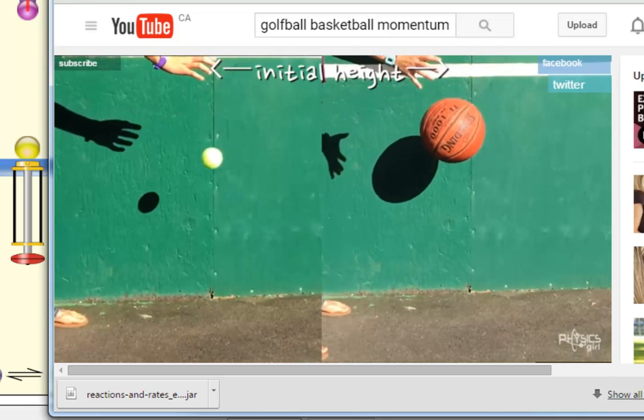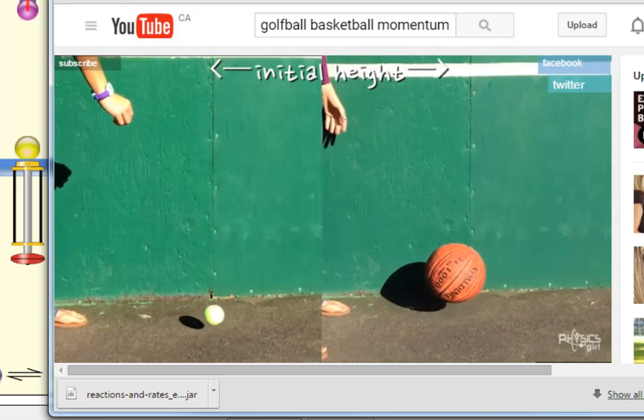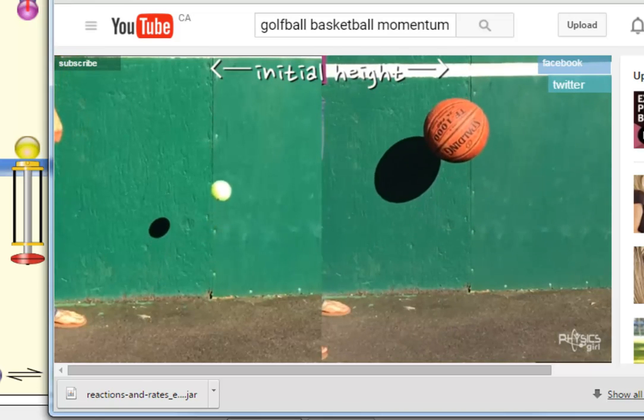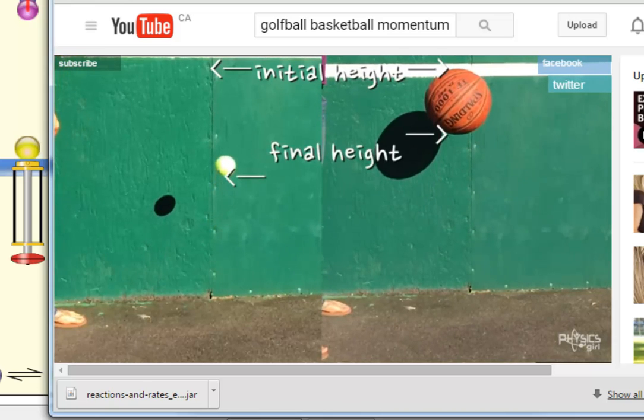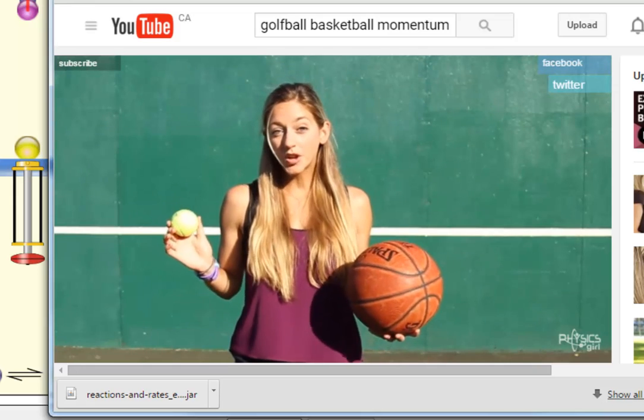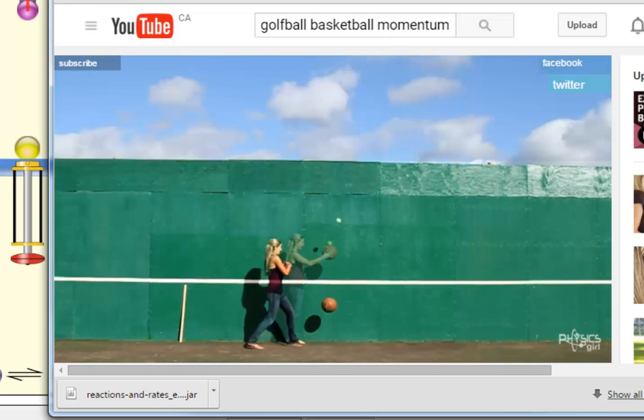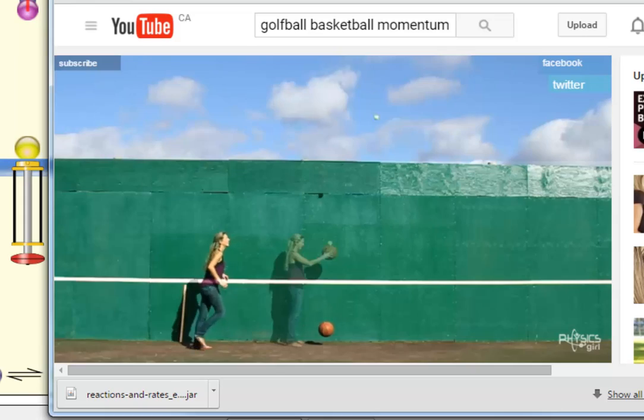As the balls hit the ground, some energy goes into heating up the ground and some goes into heating the ball. Because that energy left the ball system, you can't get back up to the same height. But when you combine them, the tennis ball goes higher than its dropped height. Way higher. Where does it get the extra energy?